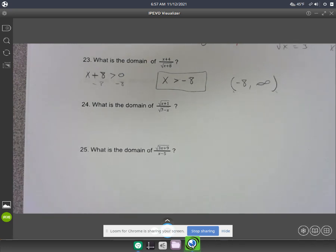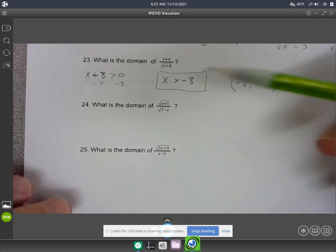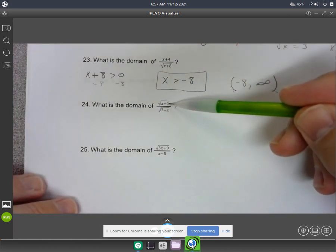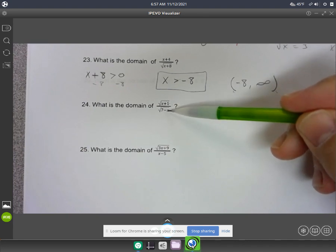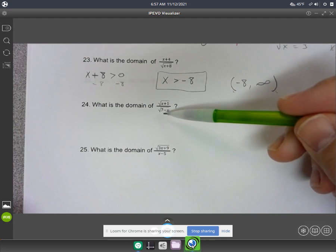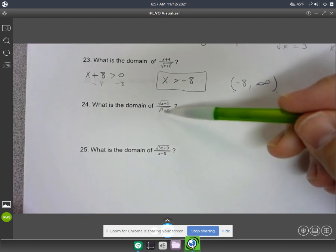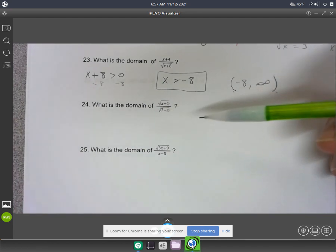Like if you try to plug in the number 10, you would run into a problem up, or sorry, you wouldn't have a problem up top, but when you try to plug in 10 to the bottom, you would run into an issue because you can't do 7 minus 10 and then take the square root, can't take the square root of a negative.